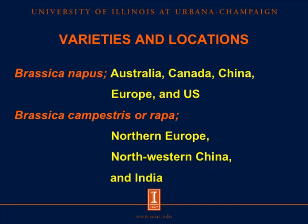For variety and location of canola and rapeseed, there are two different varieties that grow in different regions around the world. Brassica napus can grow in Australia, Canada, China, Europe, and the U.S. Brassica campestris, or Rapa, can grow in Northern Europe, Northwestern China, and India.